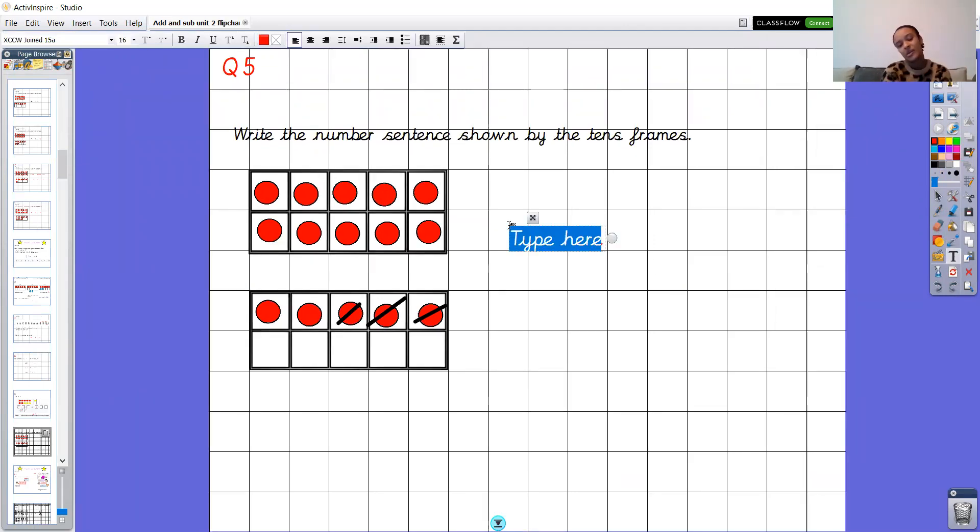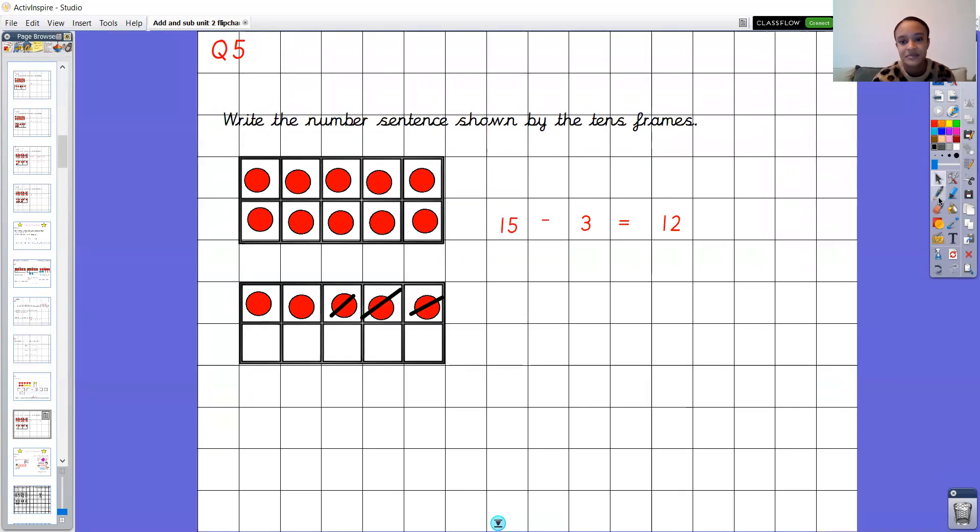Fantastic so we've got what number all together? Well we've got 10 here, we can pop that straight in our head. 10, 11, 12, 13, 14, 15. We've got 15 there and we want to take away now. How many have we crossed off? Well we've crossed off one, two, three. So 15 take away three. Equals how many have we got left? We want to pop that 10 in our head again. We'll do 10, 11, 12. Fantastic, 15 take away three equals 12. Super.